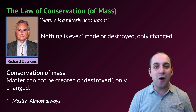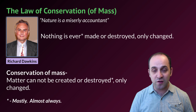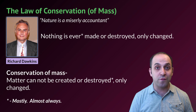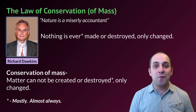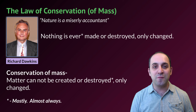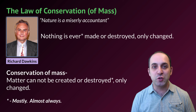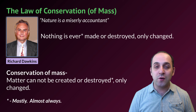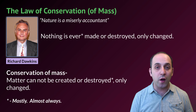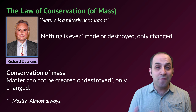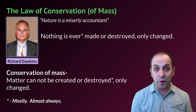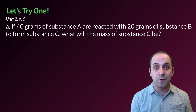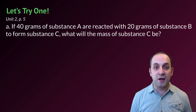It took chemists a long time to establish this because small amounts of mass are frequently lost to the environment in laboratory settings, requiring very exacting experiments. This is now a well-established principle: over the course of any change the total amount of matter must remain constant. Note the asterisk — in situations involving nuclear phenomena, matter and energy can be interchanged, but for the vast majority of circumstances no matter is ever created or destroyed during a physical or chemical change.